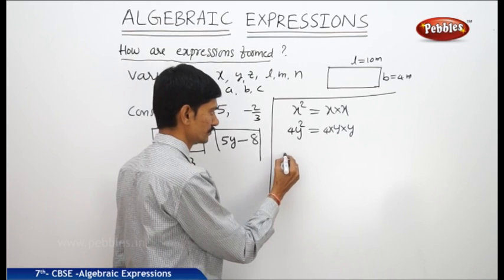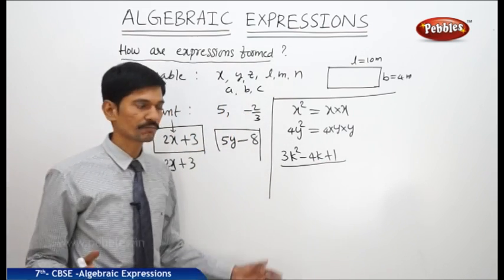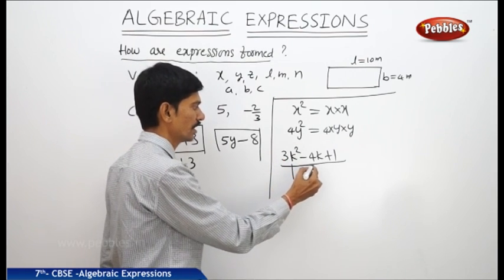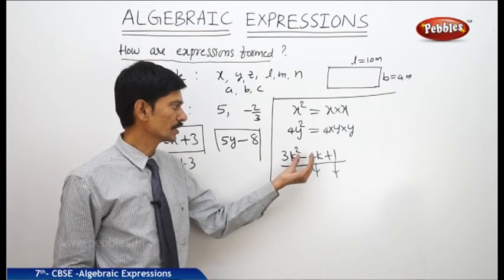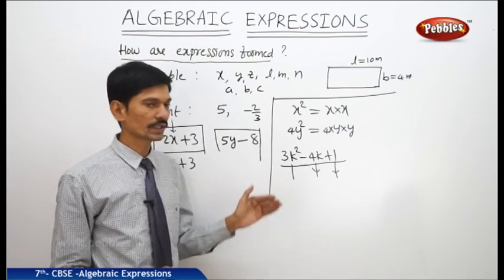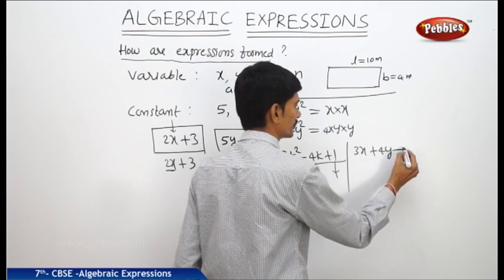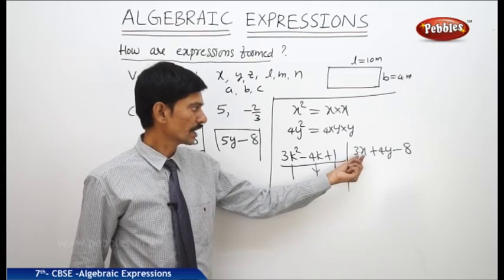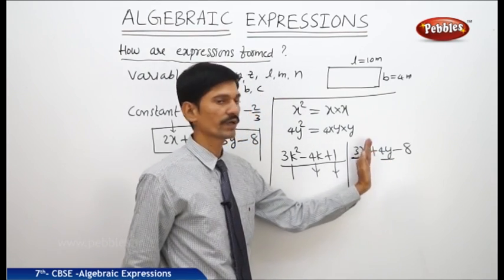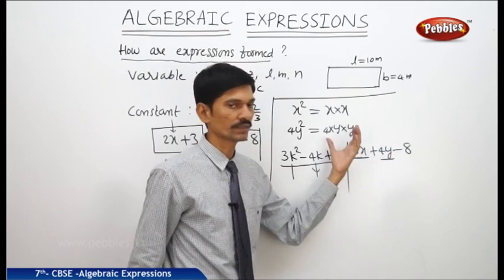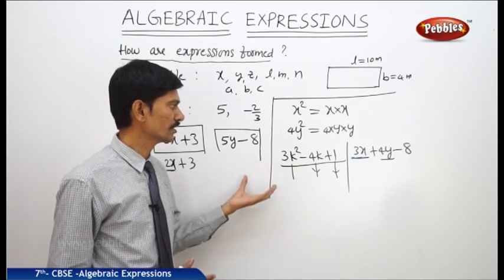Another expression 4y square is obtained by multiplying y by y, and this product is again multiplied by the constant 4, giving us 4 into y into y, which is 4y square. Another example: 3k square minus 4k plus 1. This expression is obtained by three terms — 3k square, minus 4k, and plus 1 — with the variable k. Sometimes an expression can contain two or more variables such as 3x plus 4y minus 8, where there are two variables x and y. The first term is obtained by multiplying 3 by x, the second by multiplying 4 by y, and then the constant term is subtracted. The expressions are obtained by combining variables and constants by the operations of addition and subtraction.